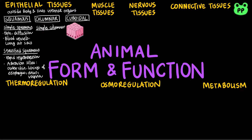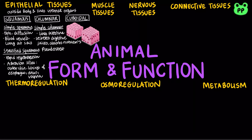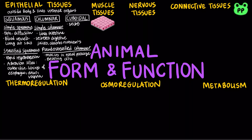Simple columnar epithelium lines our intestine. It secretes digestive juices and absorbs nutrients. Pseudostratified columnar epithelia secretes mucus in our nasal passage with beating cilia. Cuboidal epithelium functions in secretion and absorption in kidney tubules and many glands.